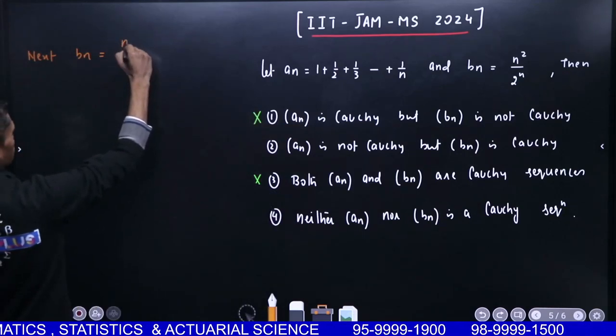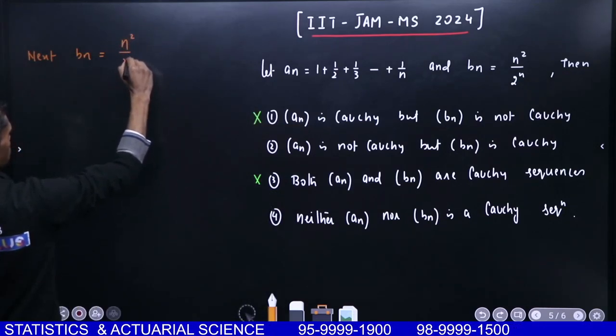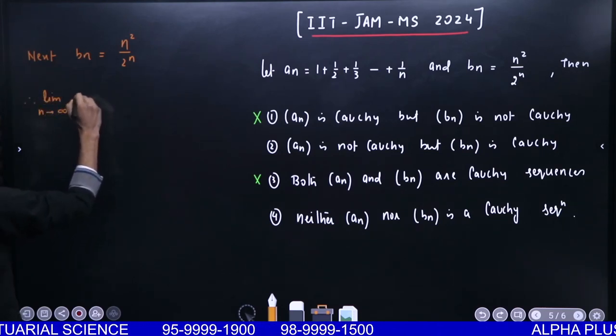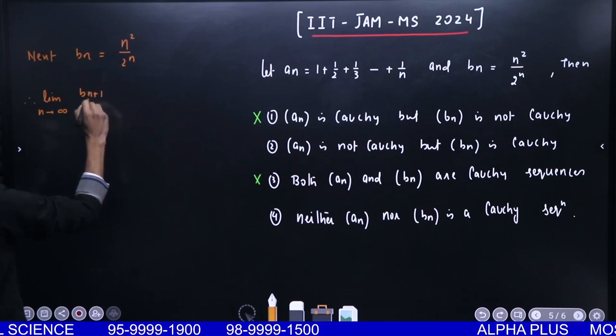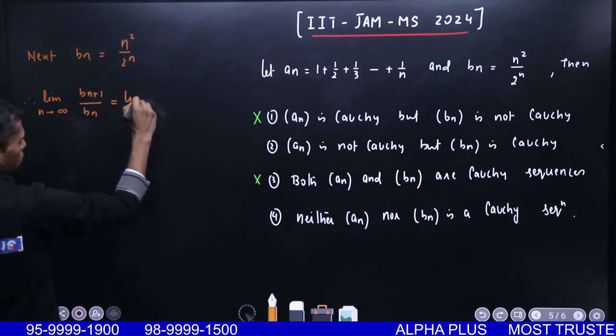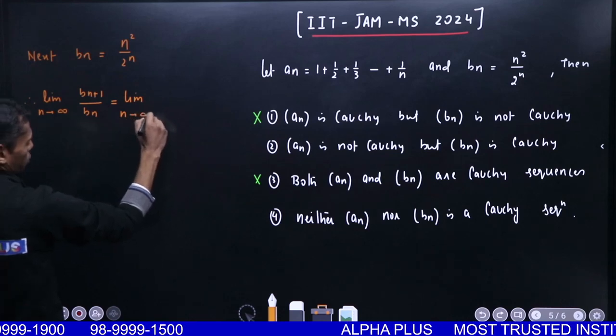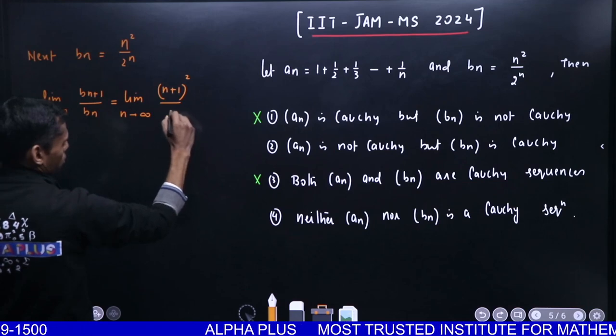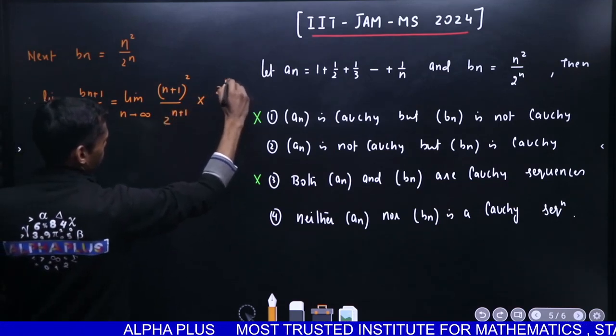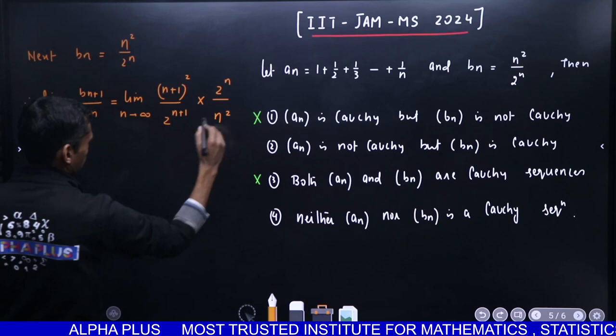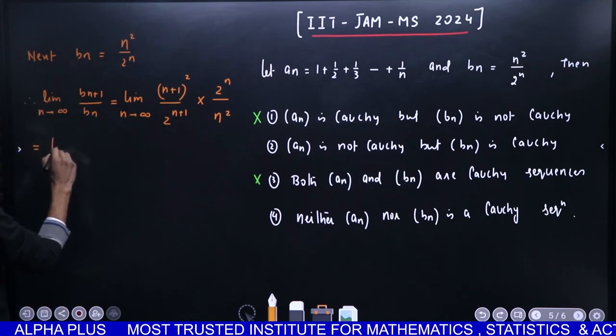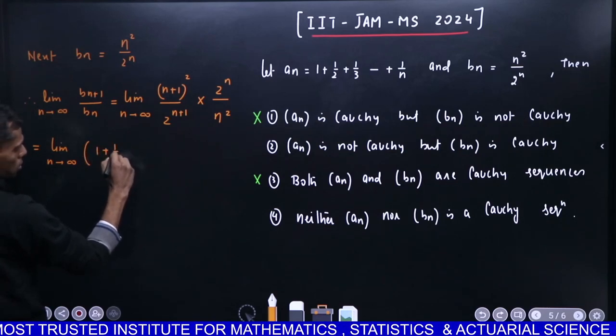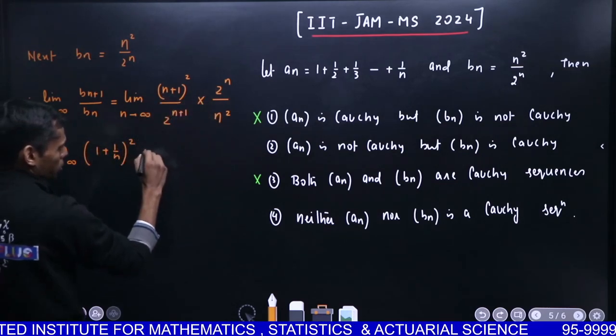So this is n²/2^n. What is limit n goes to infinity of b(n+1) over bn? This is (n+1)²/2^(n+1) times 2^n/n². Like terms together: square with square, and here you get 1/2.